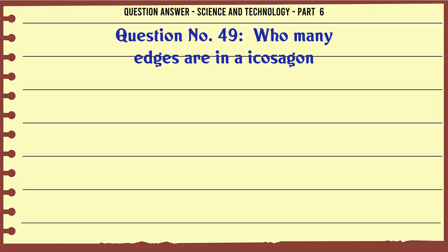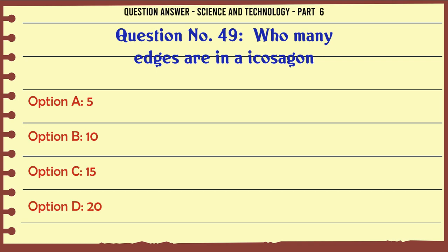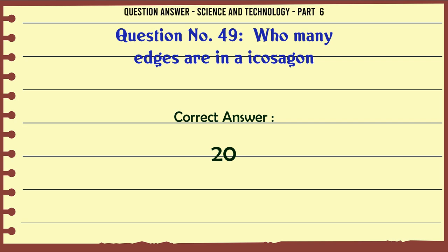How many edges are in an icosahedron? A. 5. B. 10. C. 15. D. 20. The correct answer is 20.